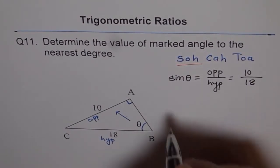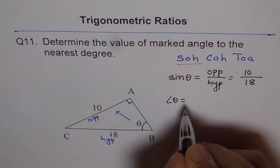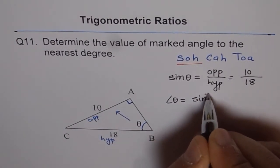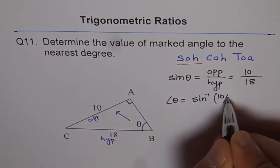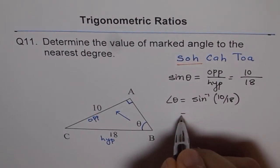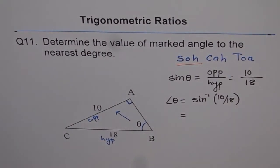We have angle theta equals sine inverse of 10 over 18, which equals second function. In most calculators, second function gives you sine inverse of 10 divided by 18.